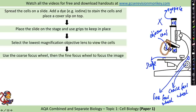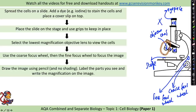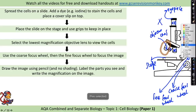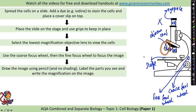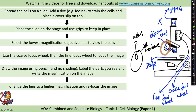Use the coarse focus wheel and then the fine focus wheel to focus the image. Draw the image using a pencil with no shading of any of the subcellular parts. For example, if drawing an animal cell, draw the cell outline and nucleus without shading, and label the parts you saw — such as the nucleus and cell membrane. Finally, change the lens to a higher magnification and refocus the image.